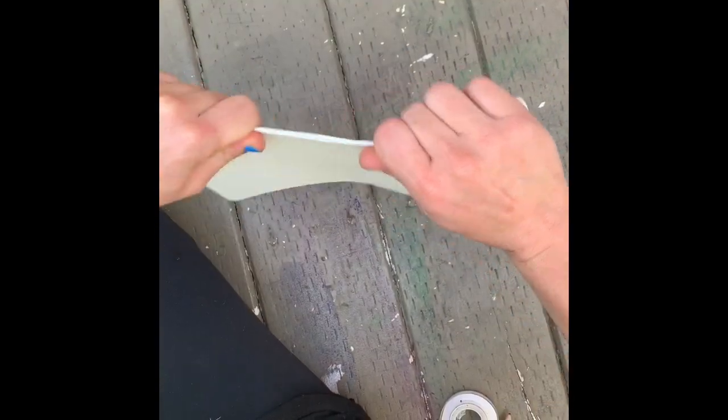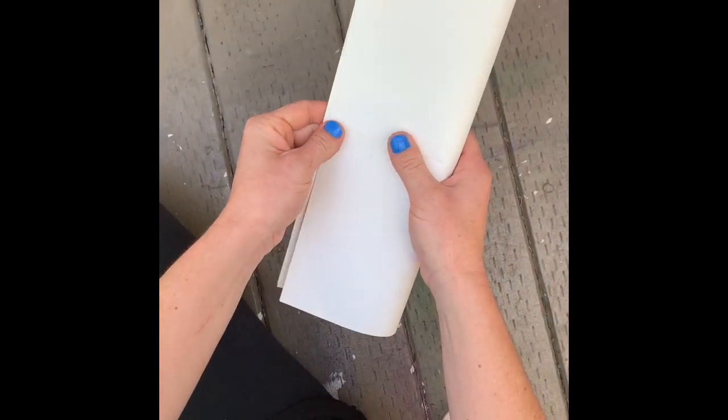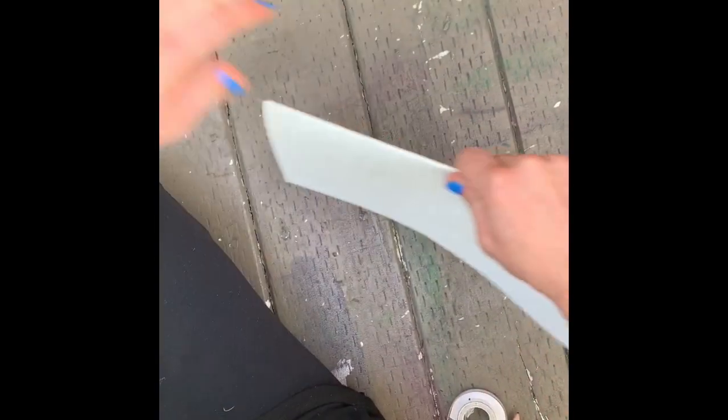To begin, fold your paper in half like a hamburger. Next, fold the paper the other way, like a hot dog. Can you see that there are four squares? If it helps, you can draw a line down the middle of your paper, and then draw a line across your paper in half.